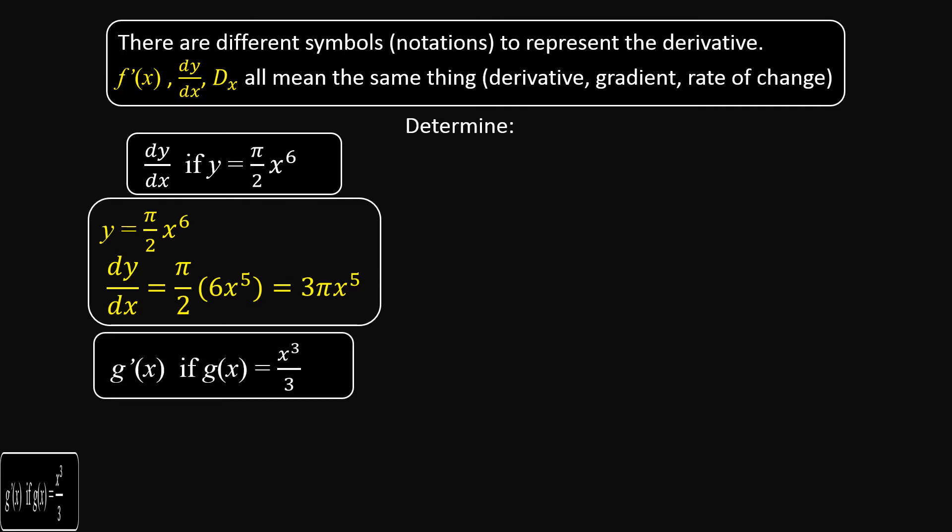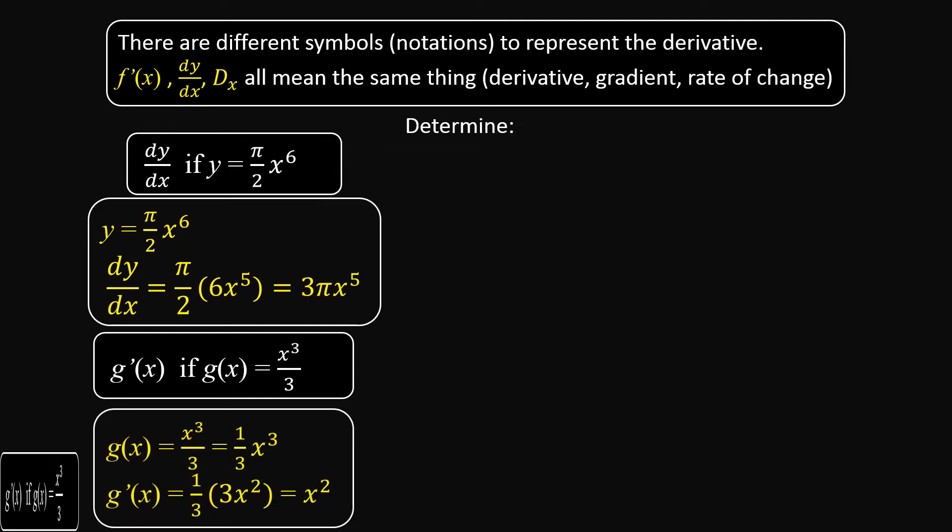Find g'(x), using another notation. If g(x) = x³/3, the exponent is 3 and the coefficient is 1/3. We rewrite it as (1/3)x³ so we can apply the rule easily. The derivative of x³ is 3x², and multiplying by 1/3 and simplifying we get x².